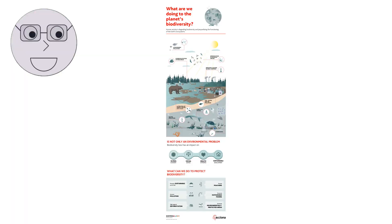The visuals show examples of human activities that are harmful to biodiversity, such as deforestation, oil spills and plastic pollution.